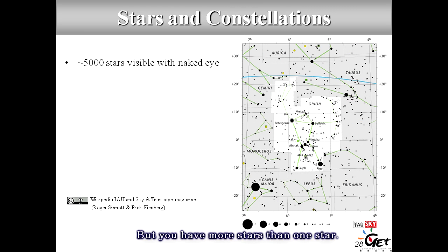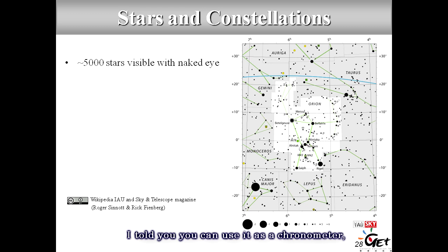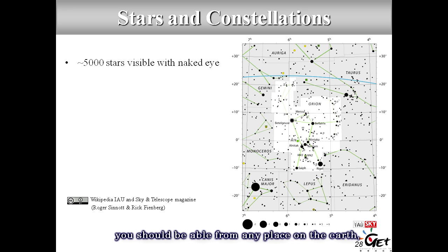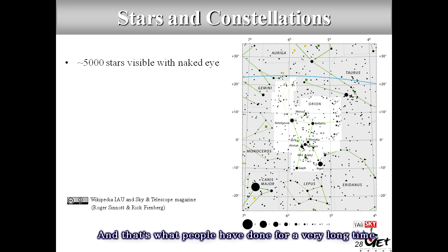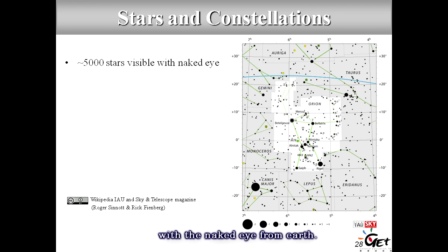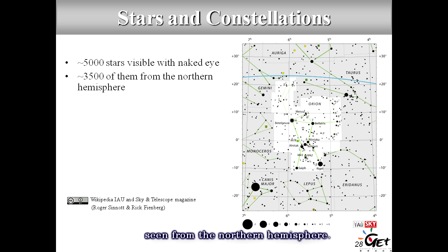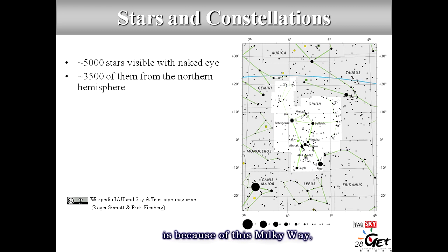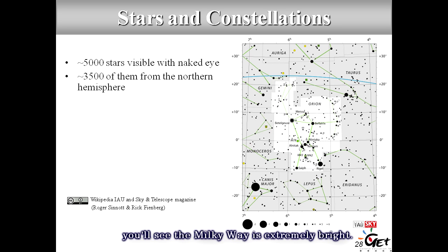When you know where North is, you know West, East, and South — it's pretty easy. But you can do far more than just pointing North. Stars can also be used as a chronometer and for very accurate position mapping. If you know the sky well, from anywhere on Earth you can know your location very accurately. There are about 5,000 stars visible to the naked eye, and 3,500 are seen in the Northern Hemisphere. The Southern Hemisphere has fewer visible stars because the Milky Way is very bright there, covering part of the sky.